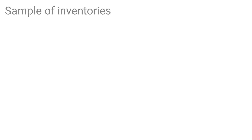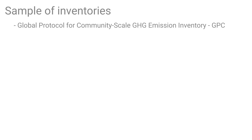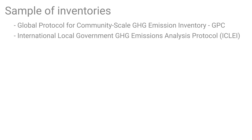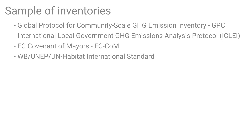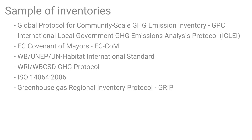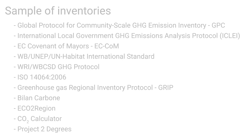Now that we've gone through some of the basics that form these inventories, here is a sample of inventories — and there are many more. There's the Global Protocol for Community-Scale Greenhouse Gas Emissions Inventory; the Local Government Greenhouse Gas Emissions Analysis Protocol by ICLEI; the EC Covenant of Mayors; the World Bank, UNEP, and UN Habitat International Standard; the World Resources Institute and World Business Council for Sustainable Development GHG Protocol; an ISO standard; the Greenhouse Gas Regional Inventory Protocol — GRIP; the French Bilan Carbone; the Eco2 Region CO2 Calculator; Project 2 Degrees; and the list goes on.